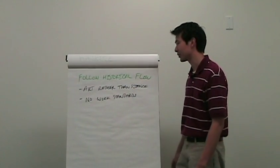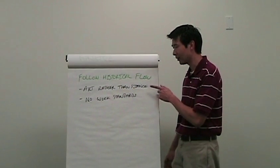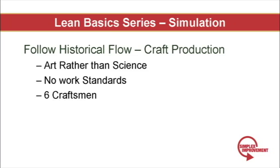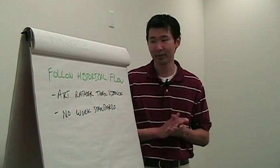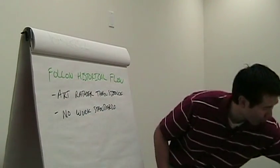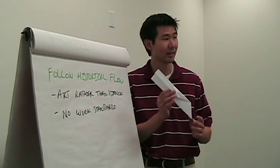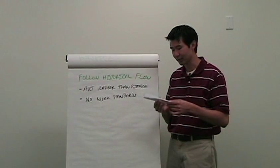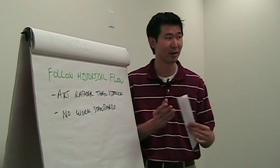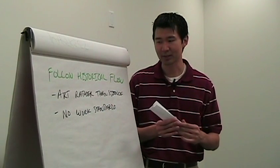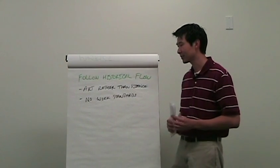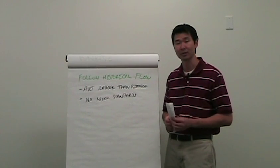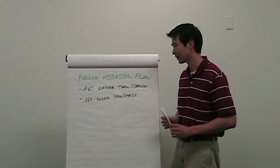For the start of the simulation, let's follow historical flow. Before Eli Whitney, everything was an art rather than a science — everything was craft-based. There were no standards, so if you told someone to build you a rifle, they would build you a unique rifle. For the start of this simulation, we will tell them to build this plane and give them the model. Will they follow the standard? It's up to them. They usually do a pretty good job mimicking it, sort of like craftsmen do, but the standards really aren't there. In this portion of the exercise, we're going to use all six workers to be craftsmen for us.